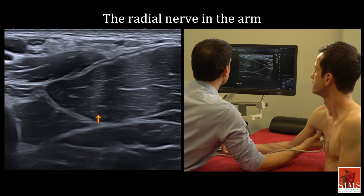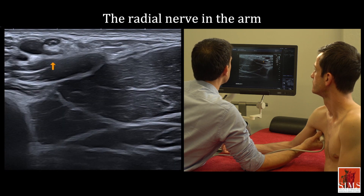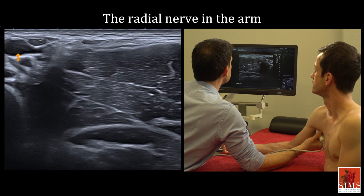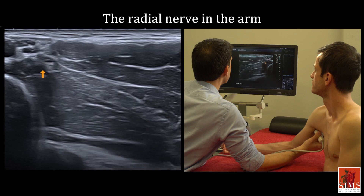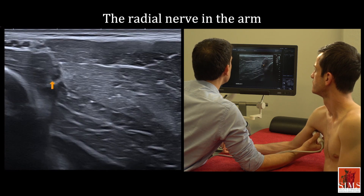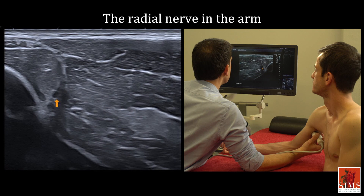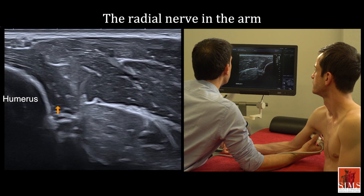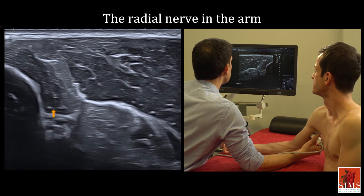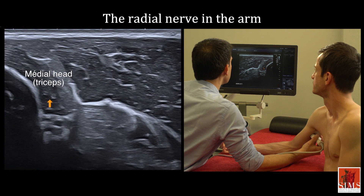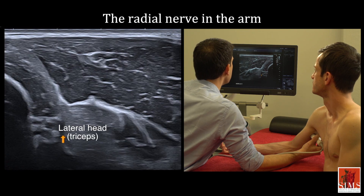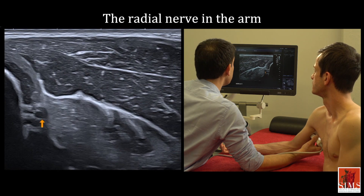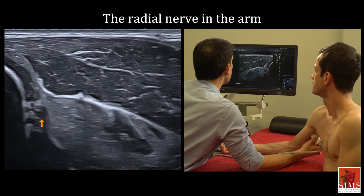In the axilla, the radial nerve originates from the posterior cord of the brachial plexus. It is located immediately posterior to the axillary artery, clearly visible here. It then plunges behind and outside along the posterior aspect of the arm to reach the bone cortex of the middle third of the humerus in a groove — more or less easy to view on ultrasound — located between the medial and lateral heads of the triceps brachii, always accompanied by the deep brachial artery, which is an easy way to locate it on ultrasound.